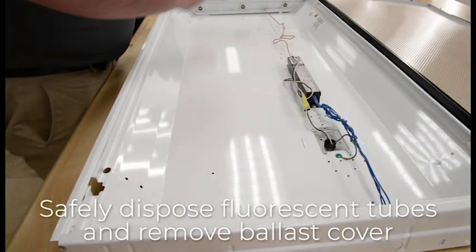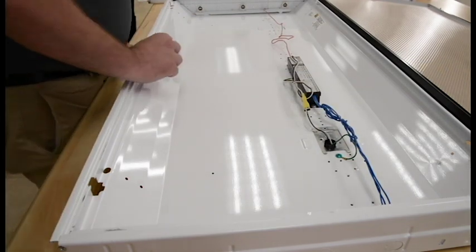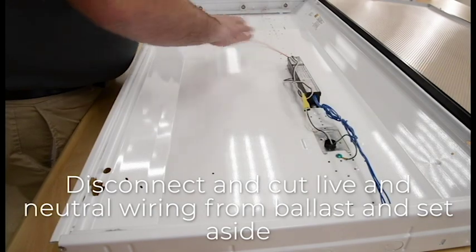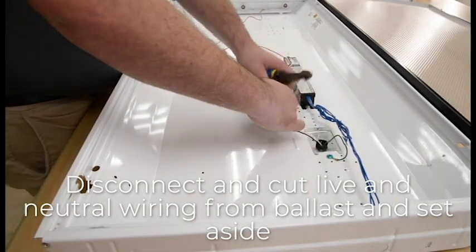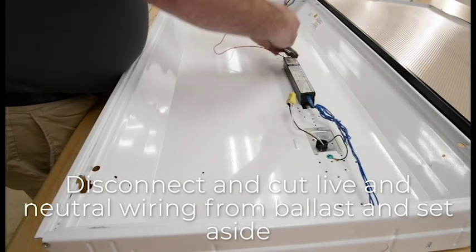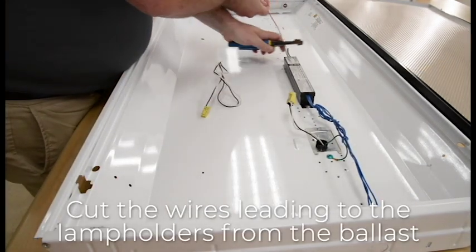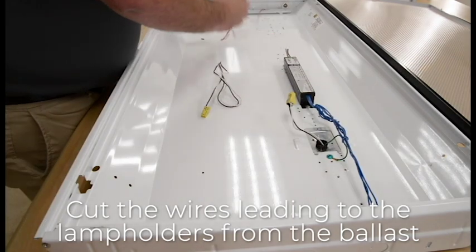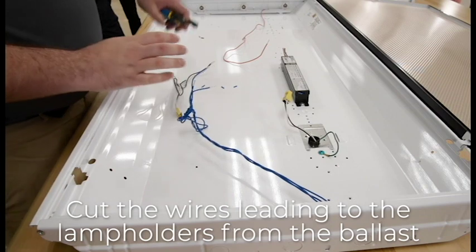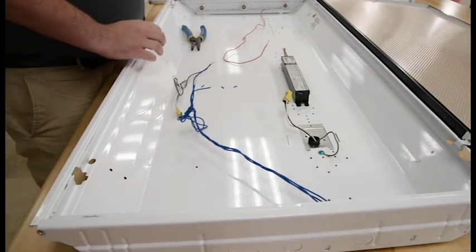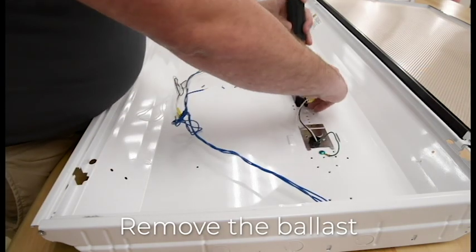Safely dispose of the fluorescent tubes and remove the ballast cover. Disconnect the wire clip connecting the ballast to the main power source, then cut the live and neutral wiring from the ballast. Cut the input and output wires that lead from the lamp holders to the ballast. Now you can remove the ballast from the fixture.